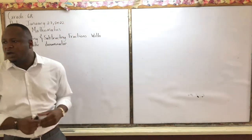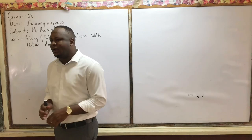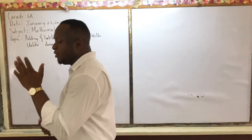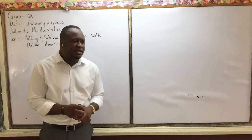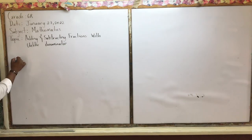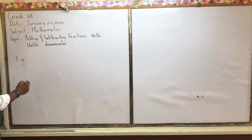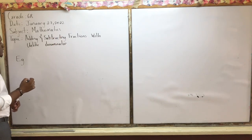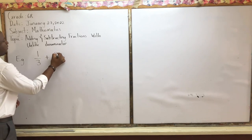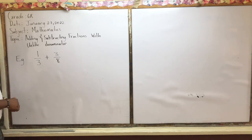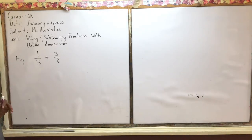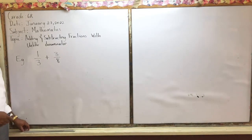We are going to look at another example of adding fractions with unlike denominators. We already did this with like denominators, and now we are going to look at adding fractions with unlike denominators. In this case, we have one third plus three eighths — two fractions with unlike denominators.